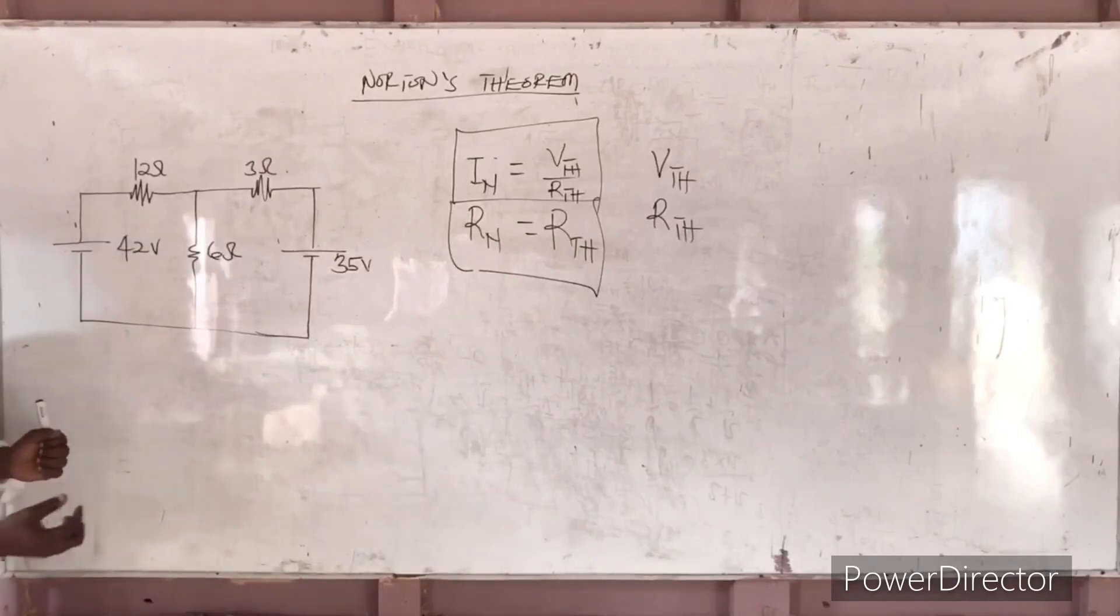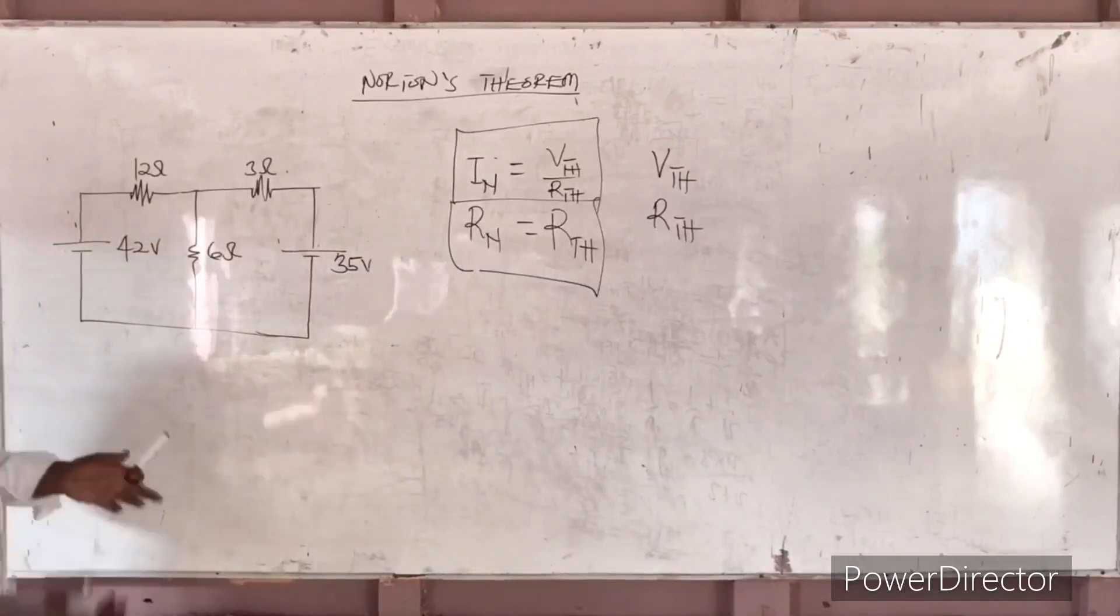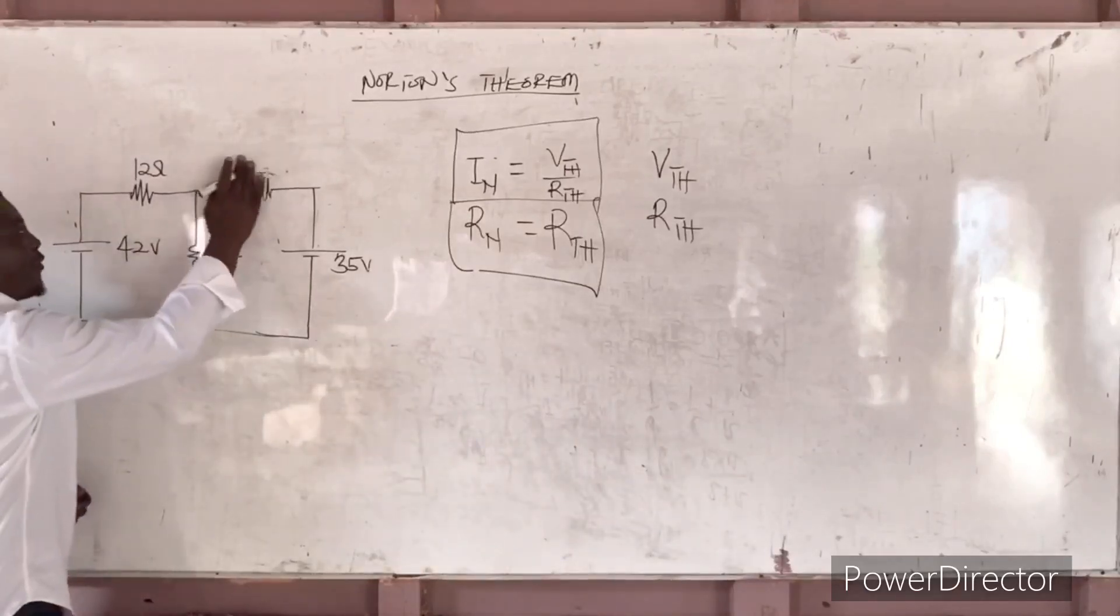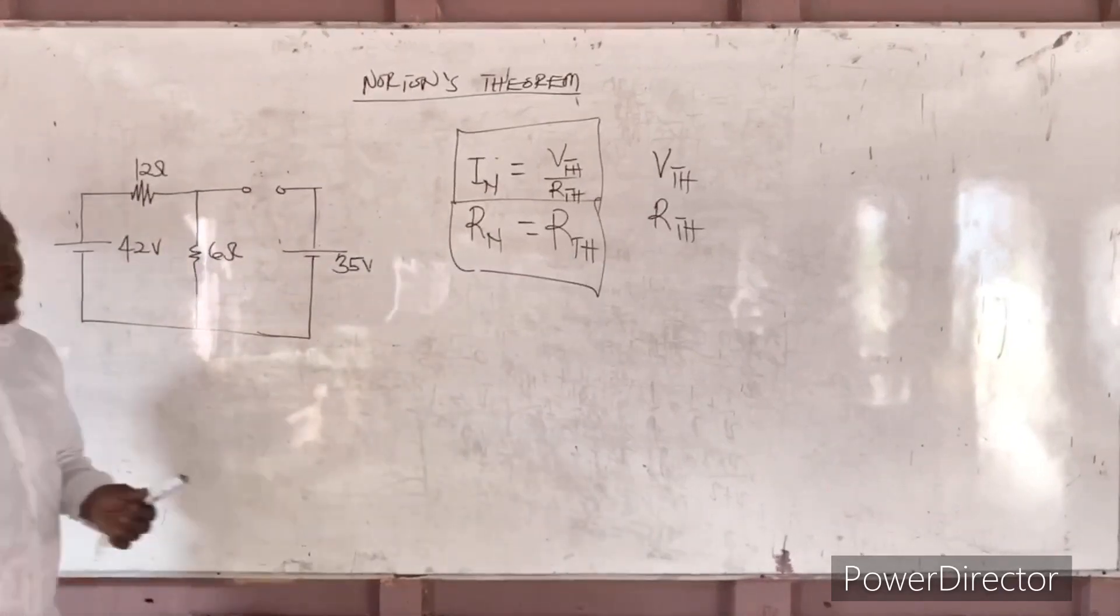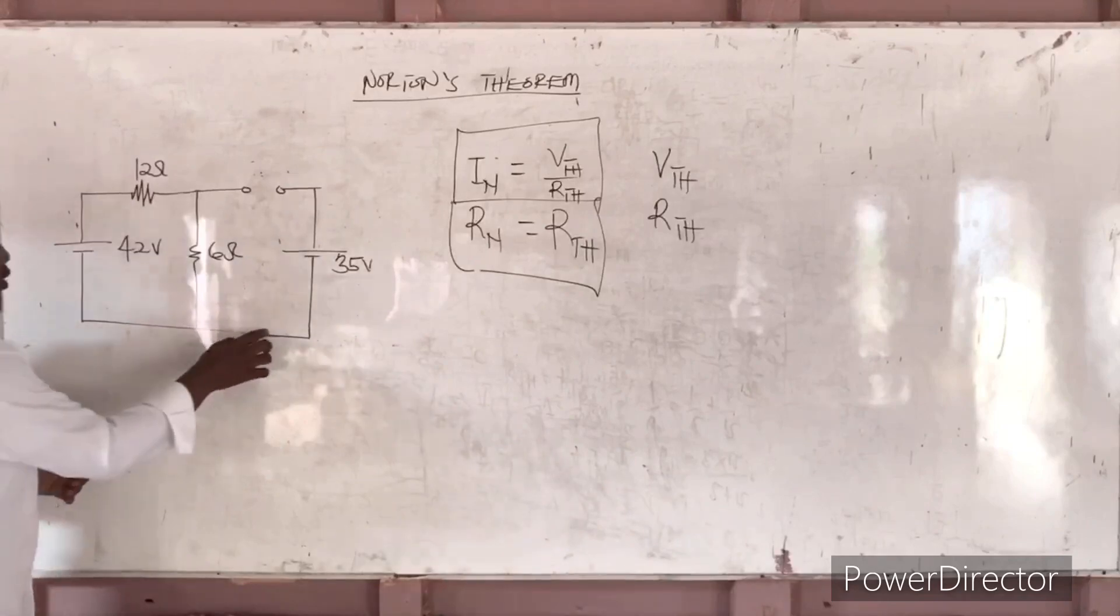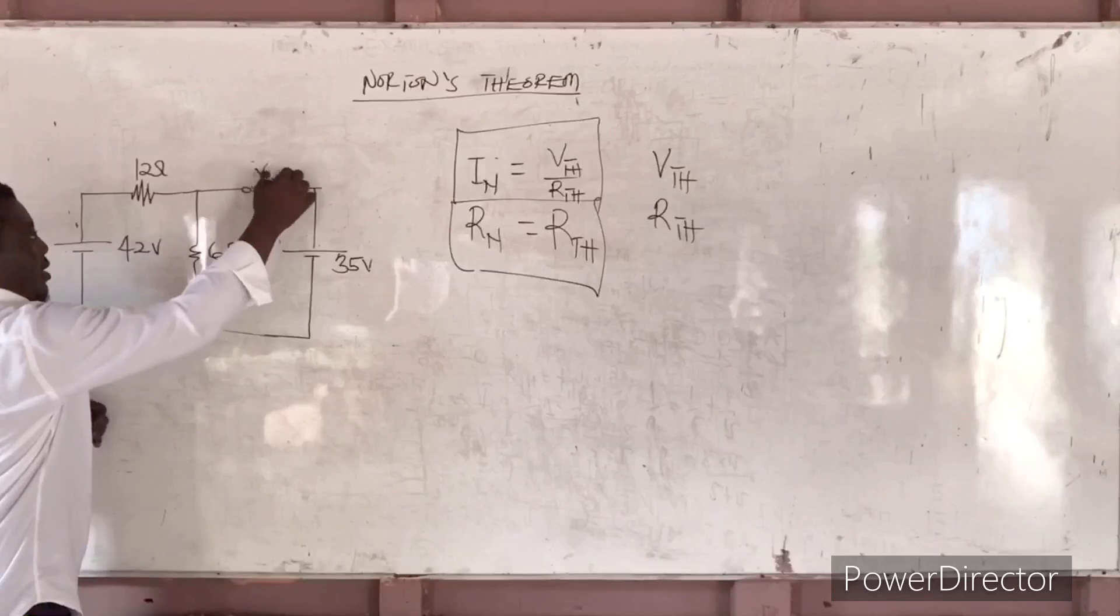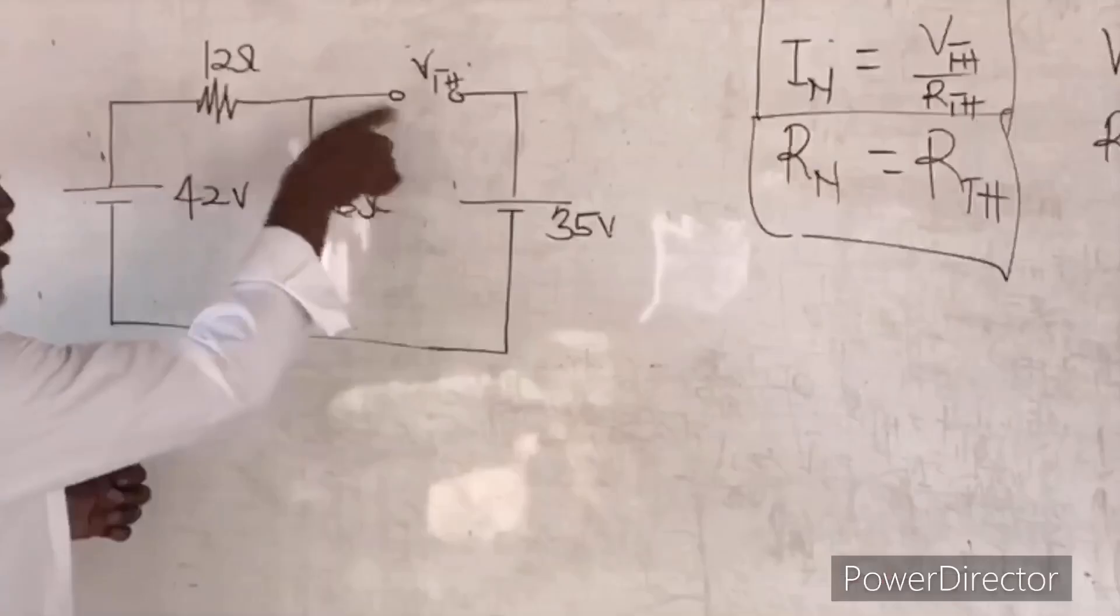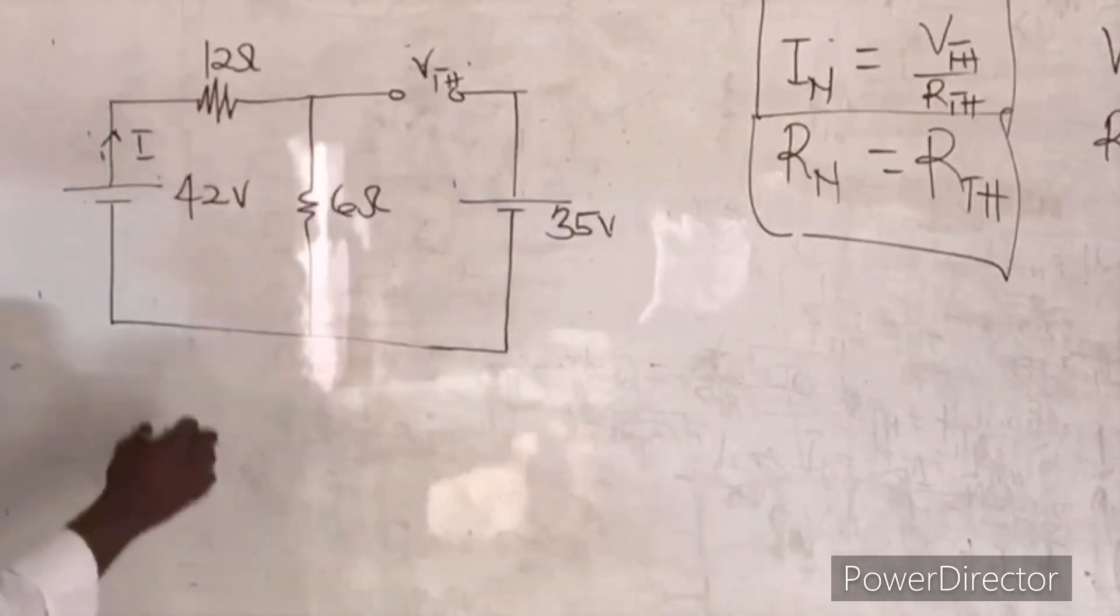The question asks us to find the current going through the 3-ohm resistor. So using Thevenin's approach to solve Norton's theory, we will first open the 3-ohm resistor. After opening the 3-ohm resistor, you will find VTH. So let's find VTH. How do you find VTH? You will take your loop. Since the circuit is open, when you are distributing your current, if there is I, I will go through only this path.